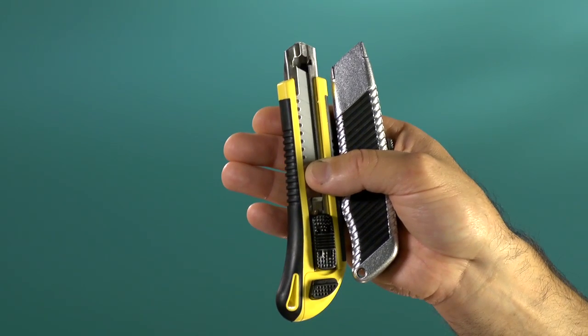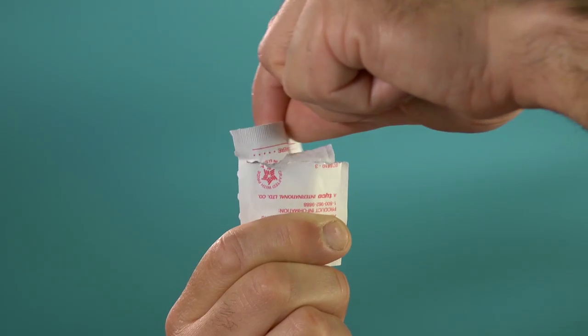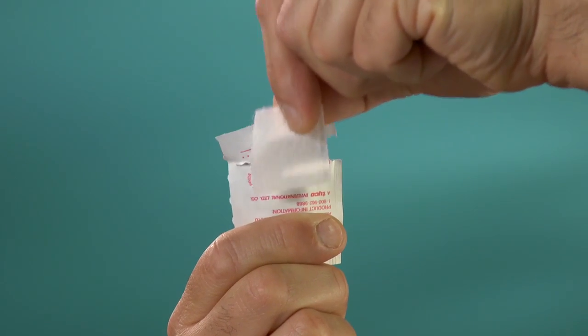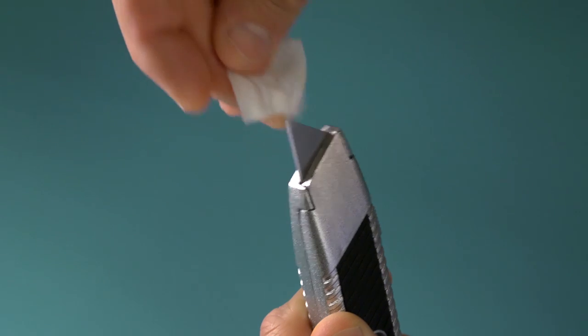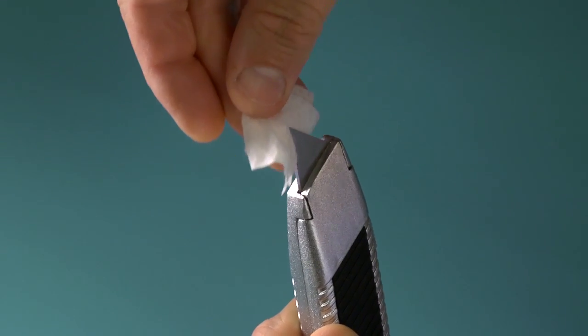You will also need a sharp utility knife. You should also have some alcohol wipes on hand to clean the blade of the knife before and after testing each area. This is done to prevent cross contamination.